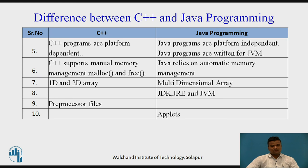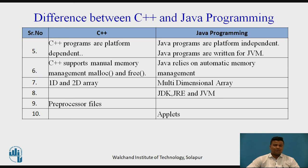In C++, there is manual memory management using malloc and free functions; Java relies on automatic memory management — unwanted files are deleted automatically. In C++, we can create 1D and 2D arrays; in Java, multi-dimensional arrays can be created. C++ does not have JDK, JRE, or JVM files; Java consists of Java Development Kit, Java Runtime Environment, and Java Virtual Machine. C++ uses header files (preprocessor files); Java does not use any preprocessor files. Java supports applets, allowing creation of different types of web pages; C++ does not have any applet feature.